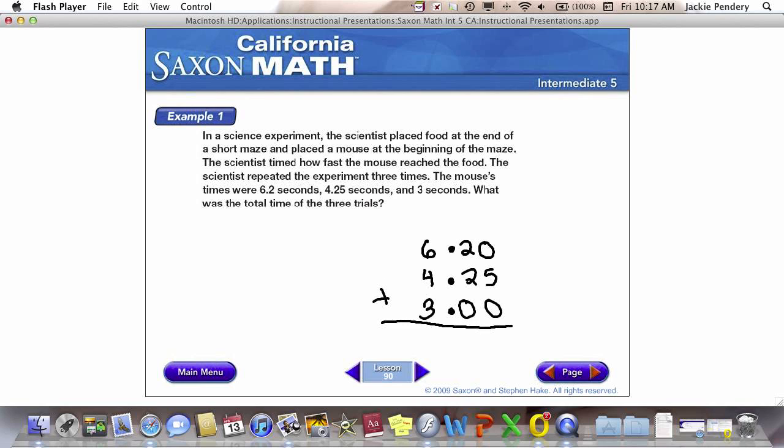We're adding, and just like when we add whole numbers and we start with the ones place, we always start on the furthest place to the right. So 0 plus 0 plus 5 is 5, 2 plus 2 plus 0 is 4. The decimal comes straight down that column and gets put in there. 6 plus 4 is 10 plus 3 is 13. So my total is 13.45 seconds.